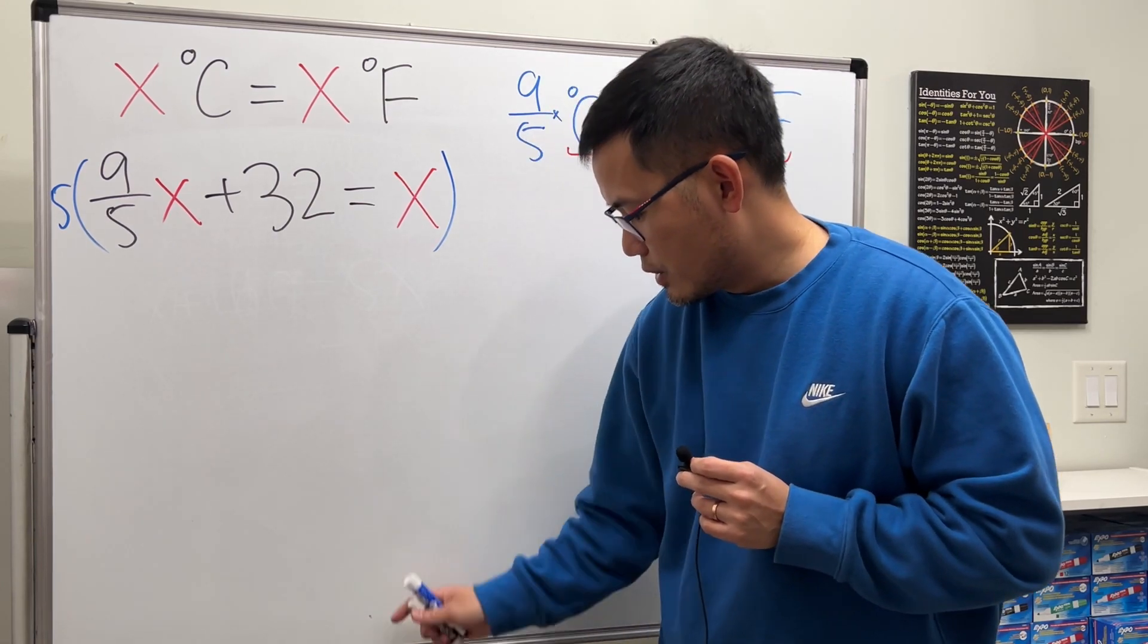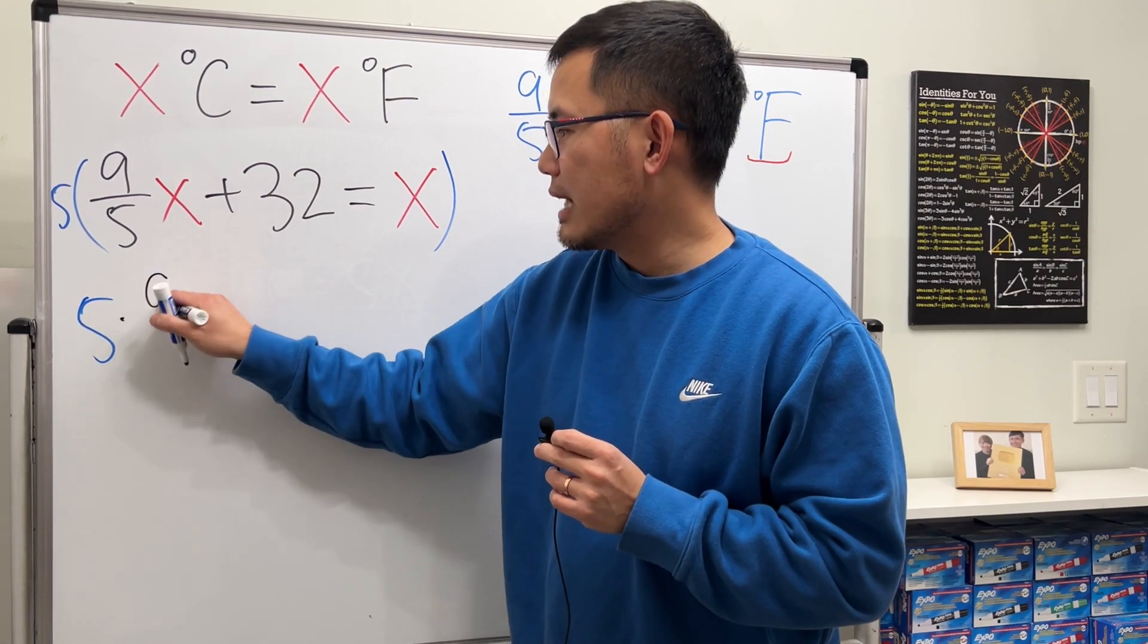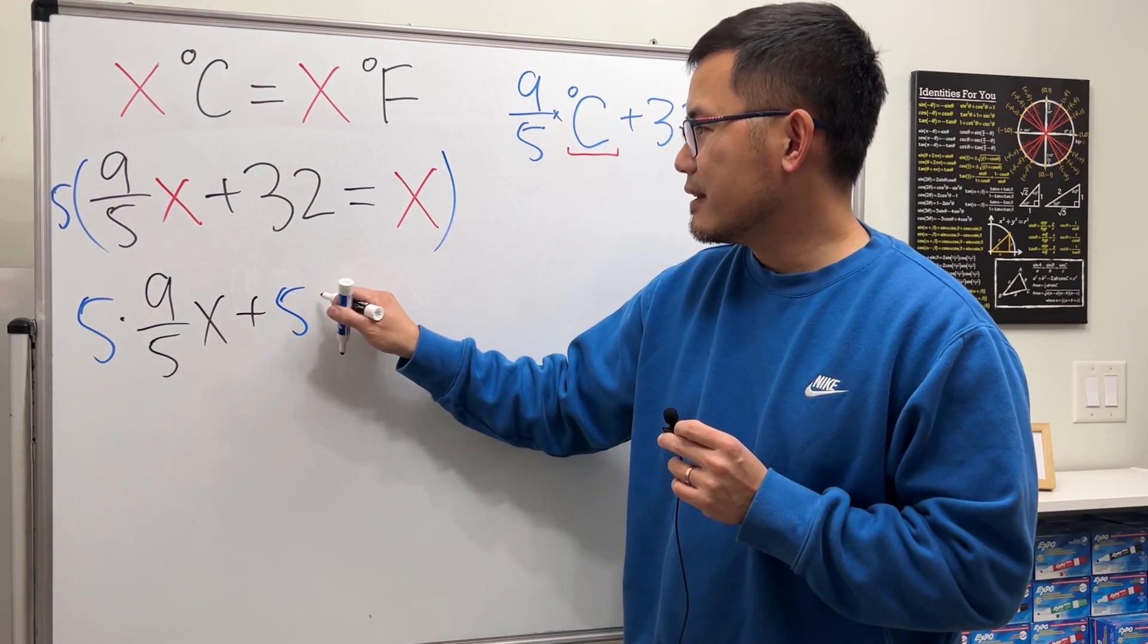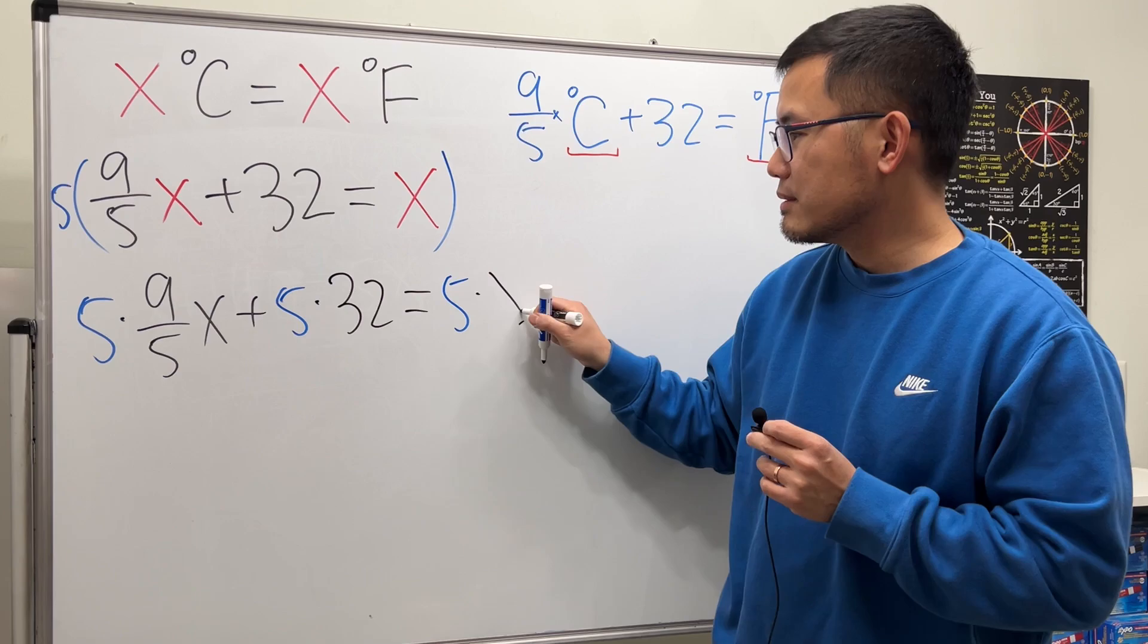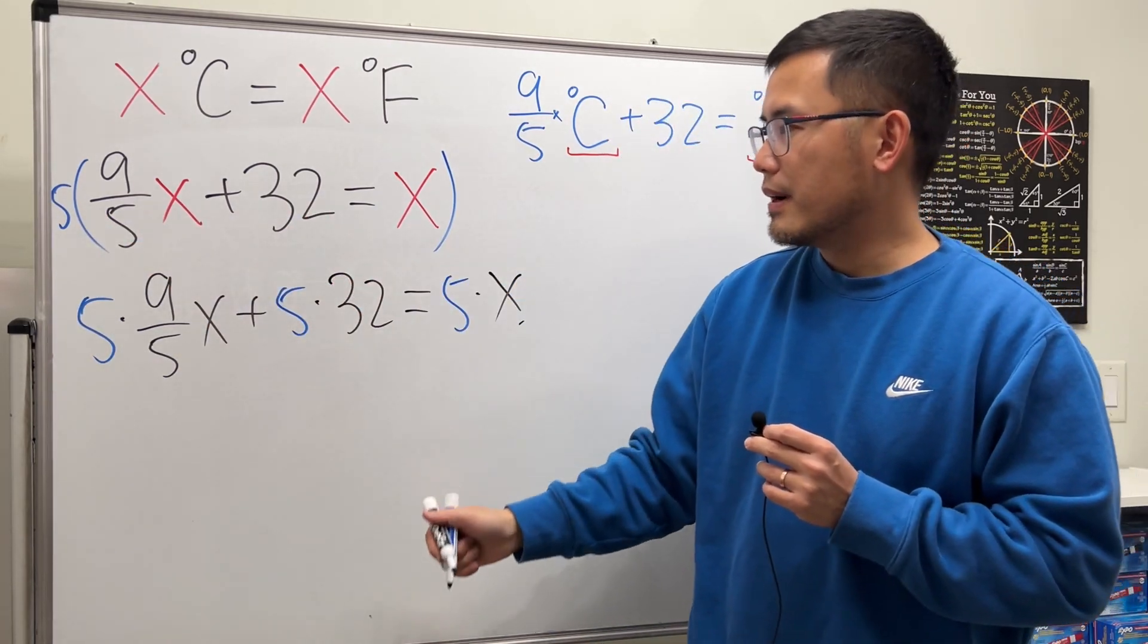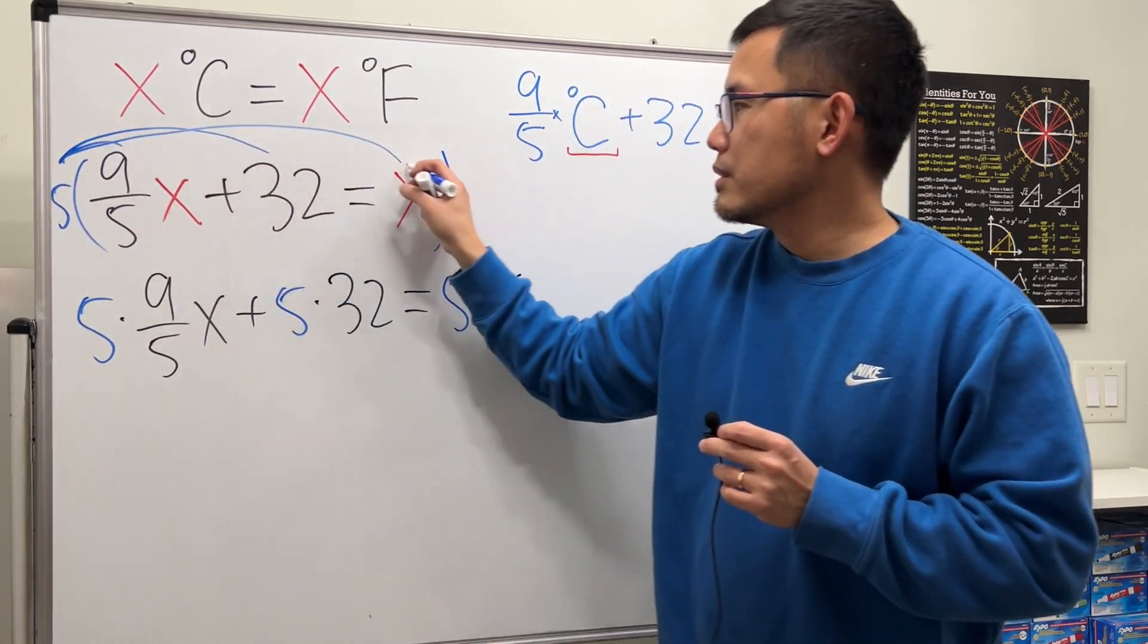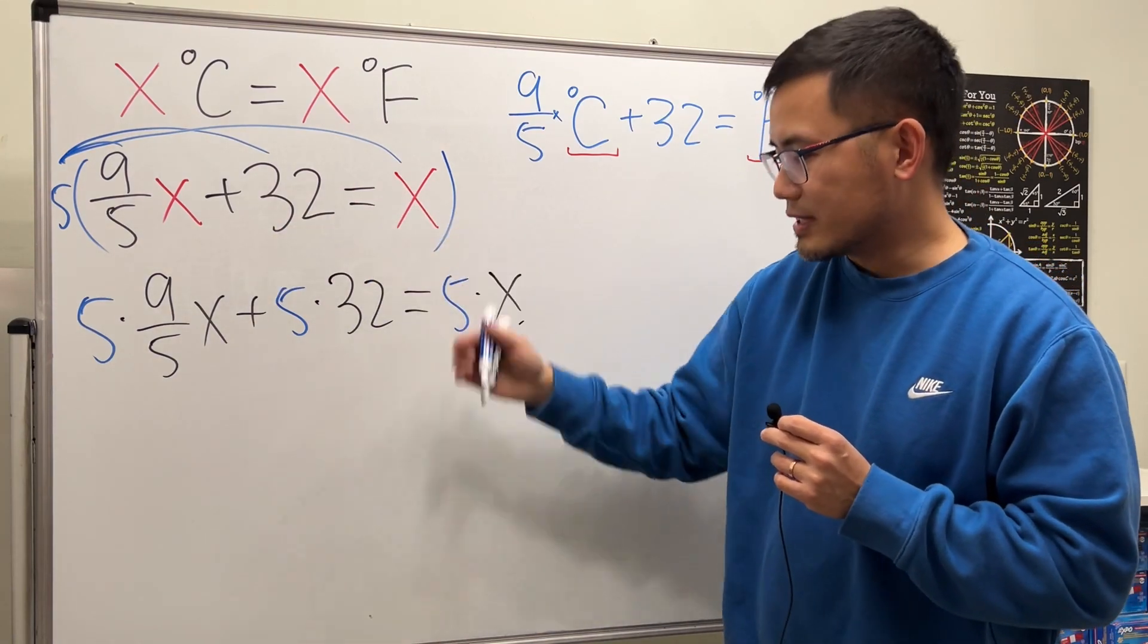So what that means is we are going to get the following. We will have 5 times 9 over 5x, and then plus 5 times 32, and that will be equal to 5 times x. Multiply each term by 5, right? Take the 5 and distribute. Like, you know, just distribute. So you'll multiply the 5 on both sides. Now we can just work this out.